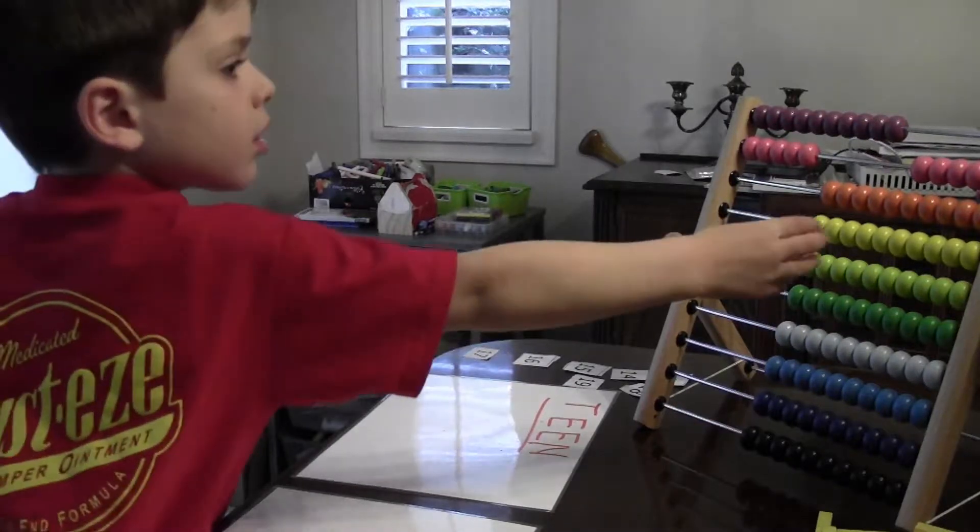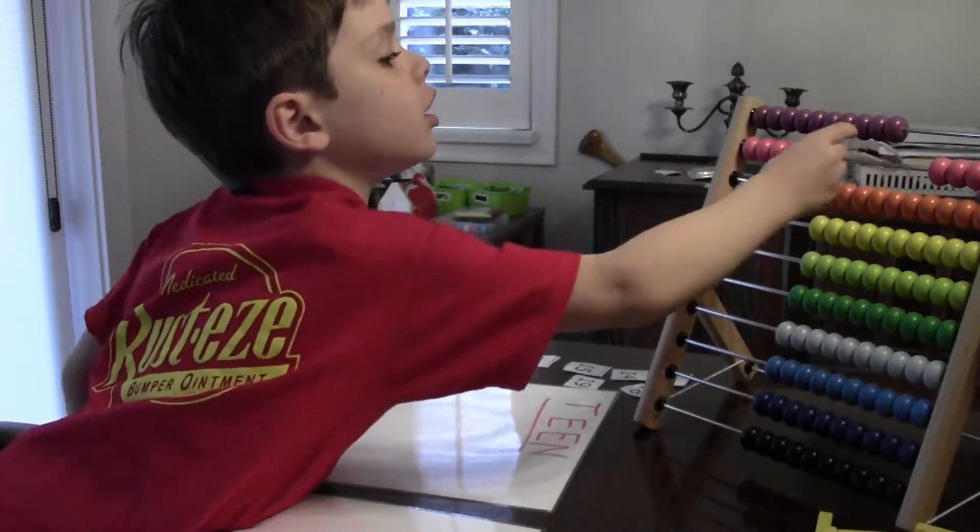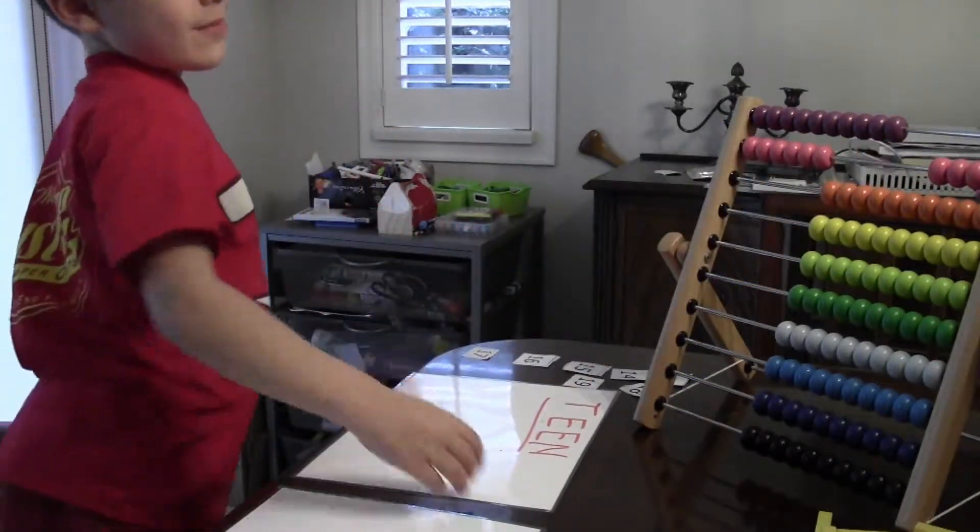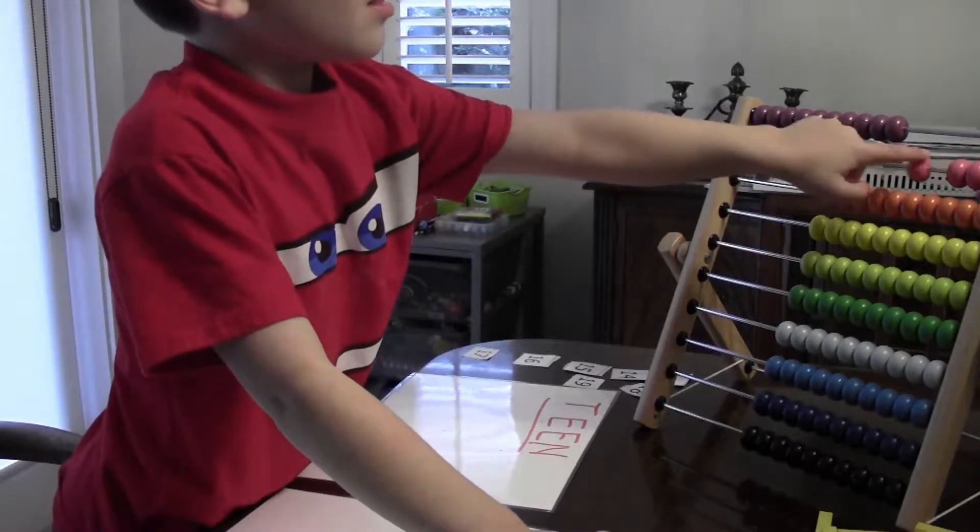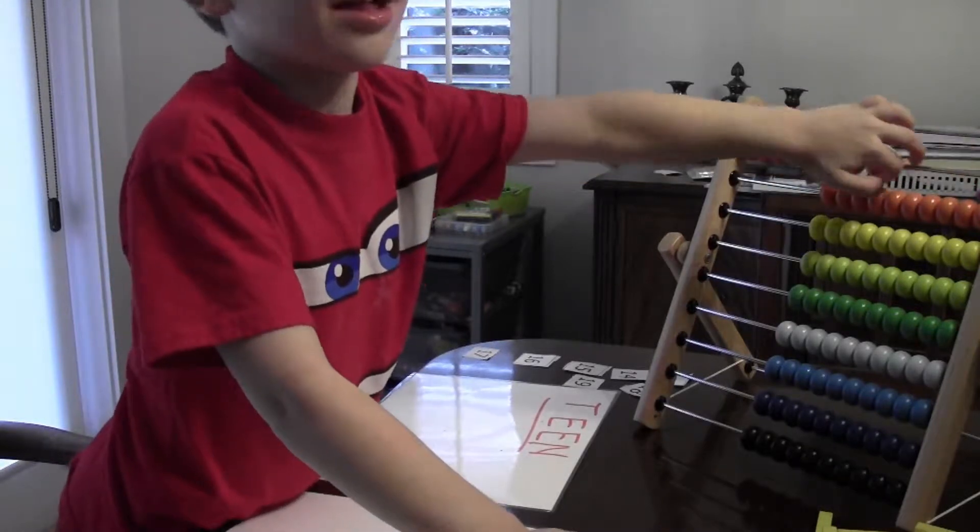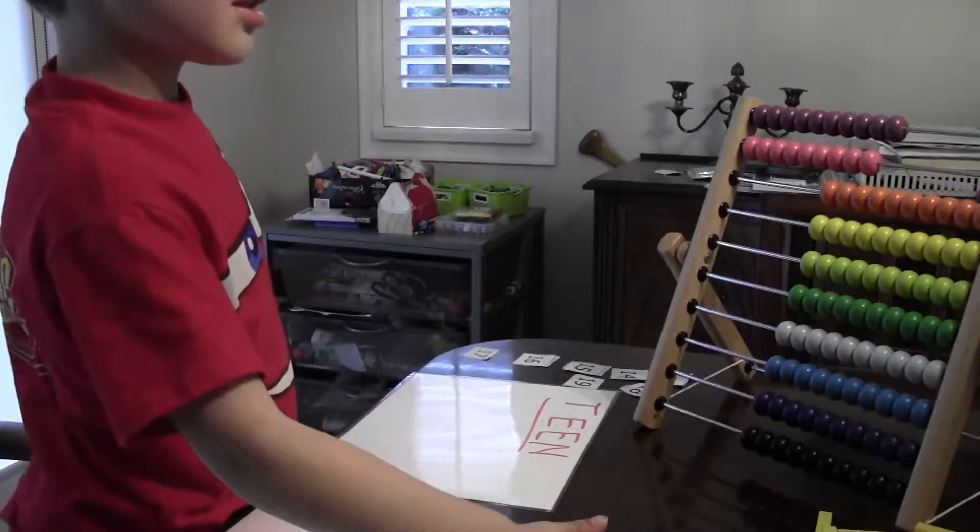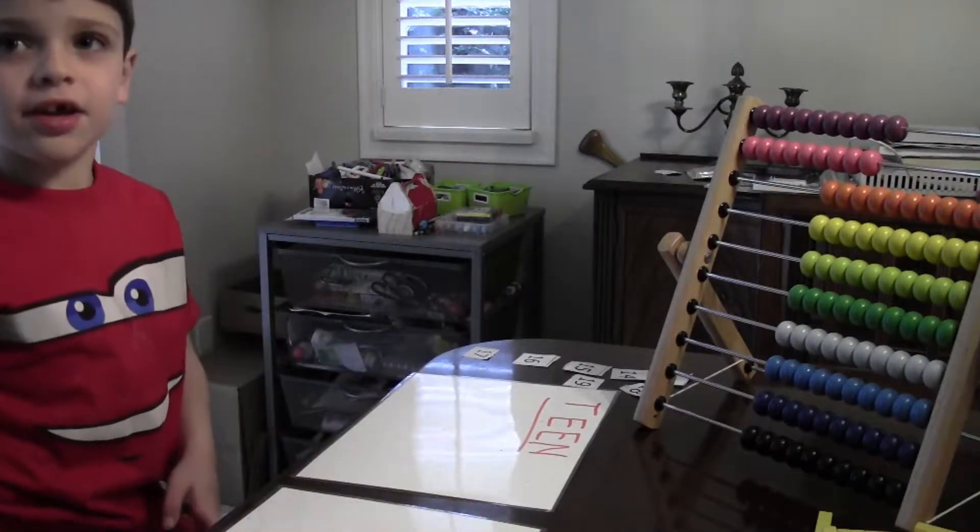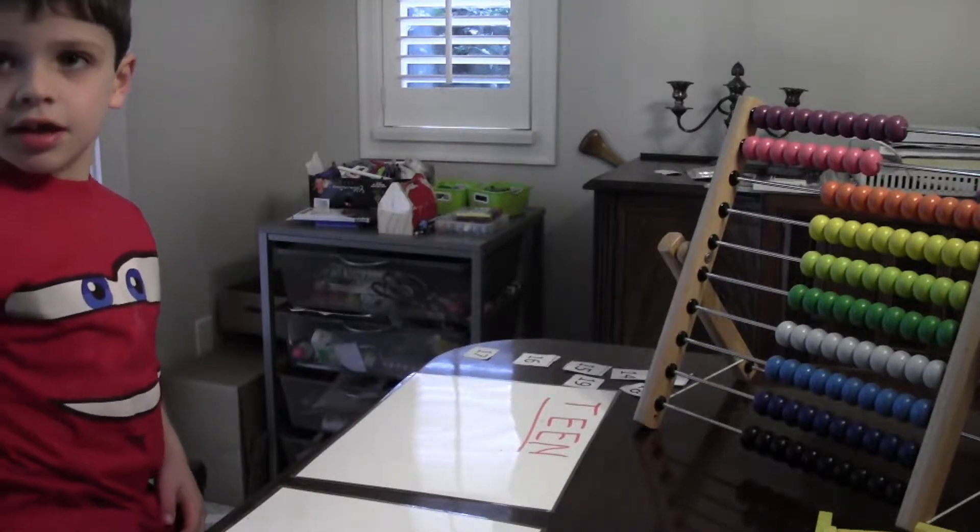Can you show me 16? Can you show me 17? Can you show me 18? Can you show me 19? Now, what do you notice about all the teen numbers? They're on the pink. Yes, they're all on the pink. Good observation.